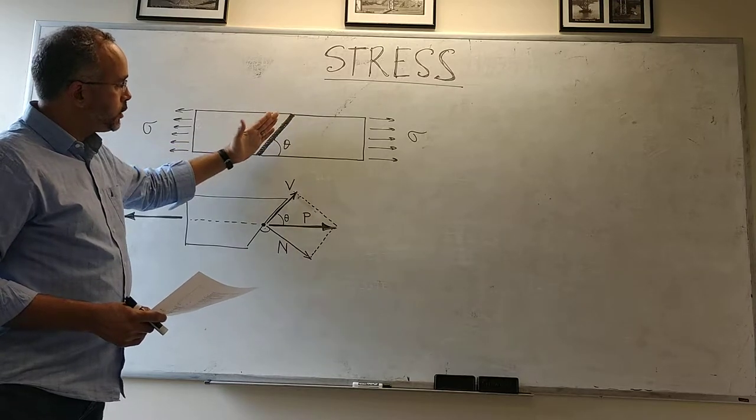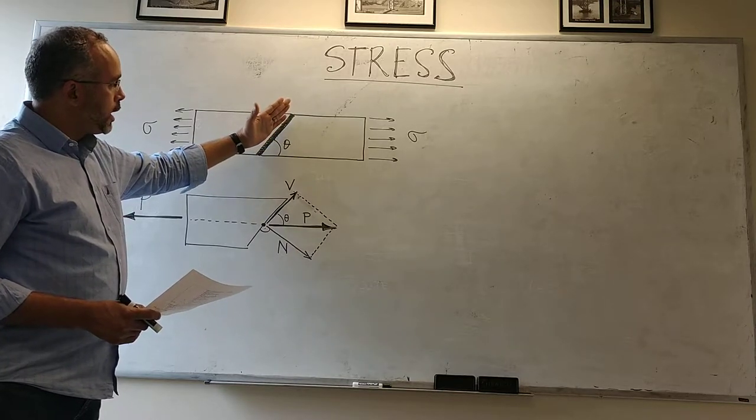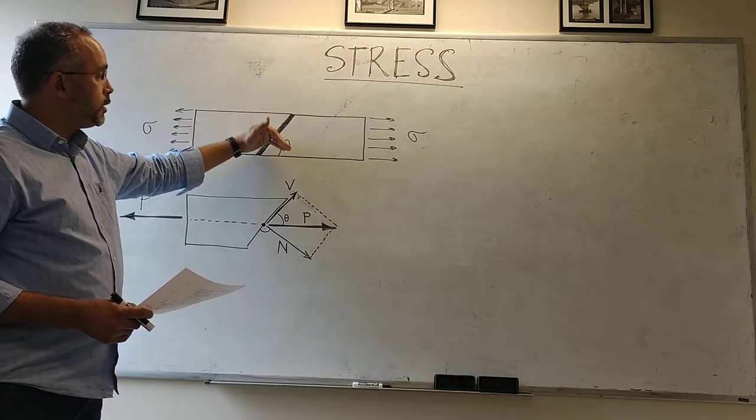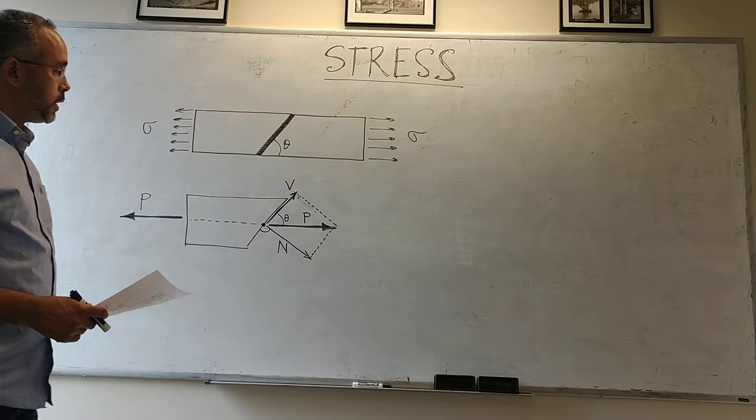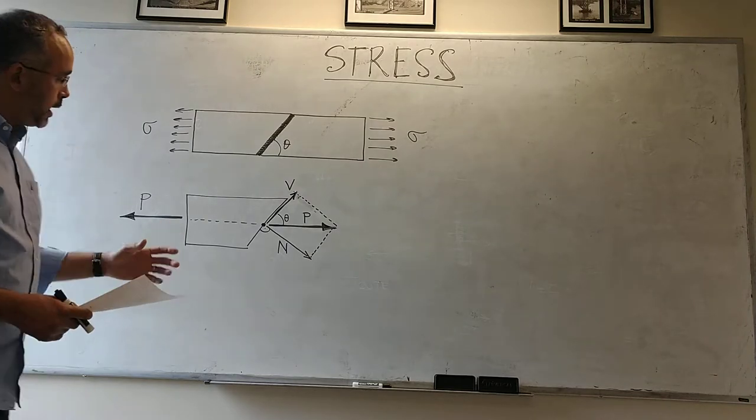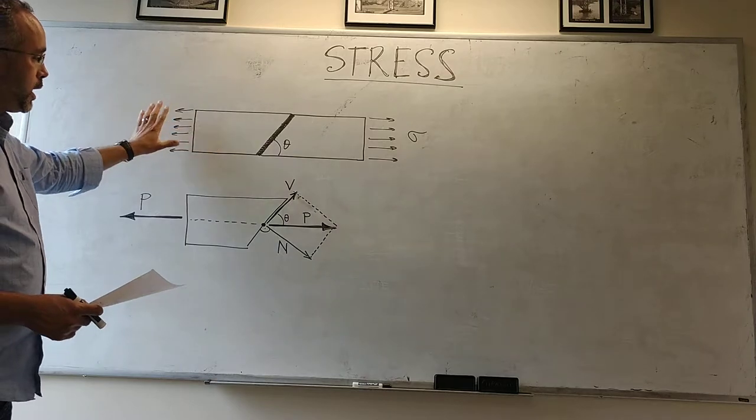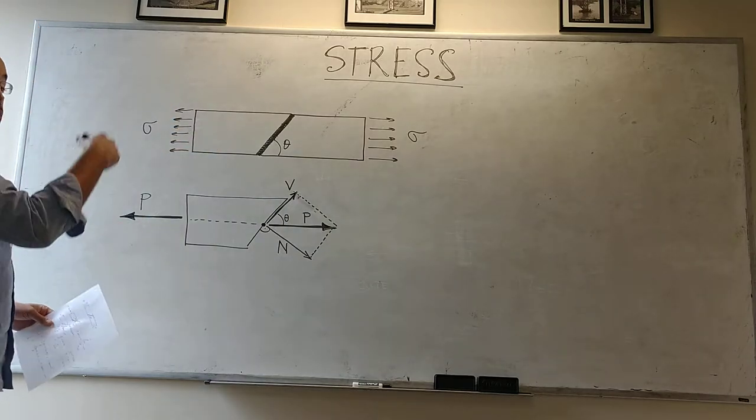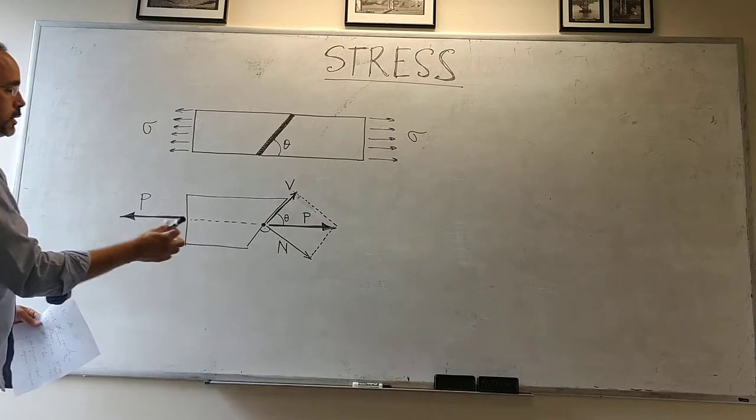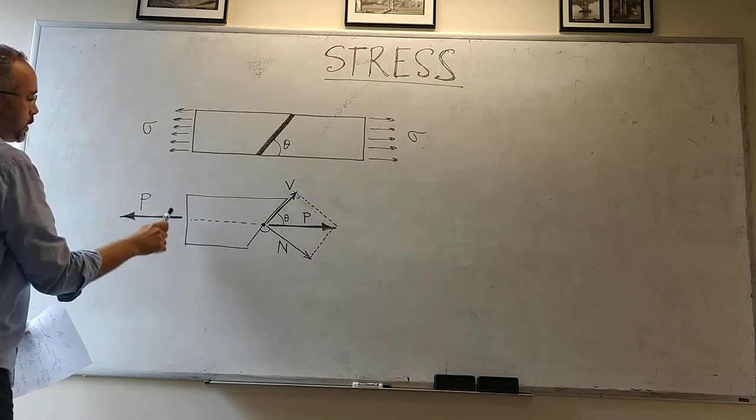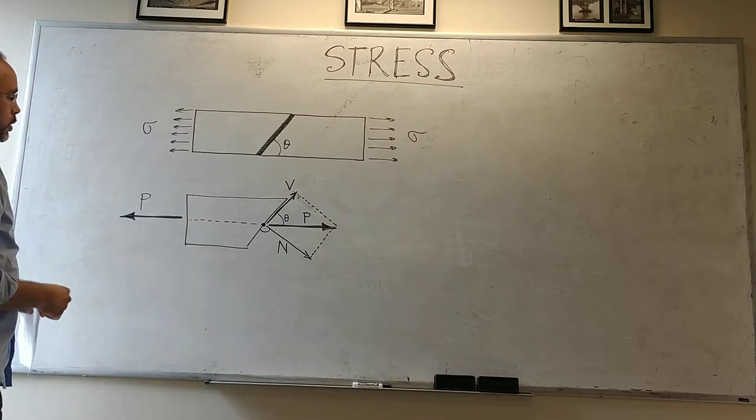The idea is that we have a connection at an angle that generates two kinds of stresses: normal and shear stress. To understand that, consider this free body diagram of the left side. I could have drawn the right-hand side too, but it's the same thing, just opposite. This stress generates a total force P.